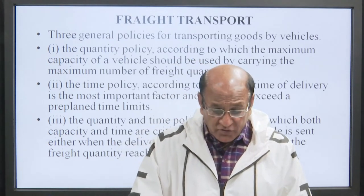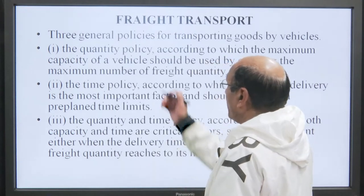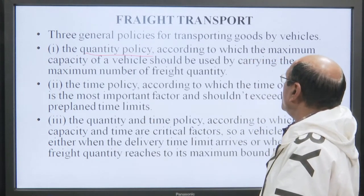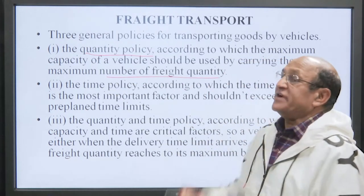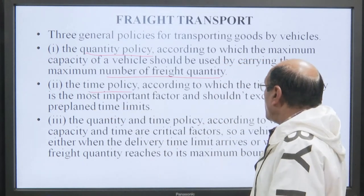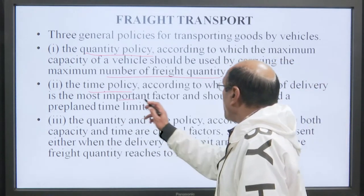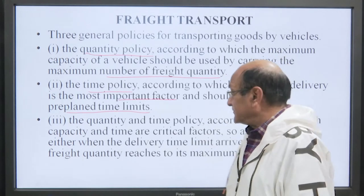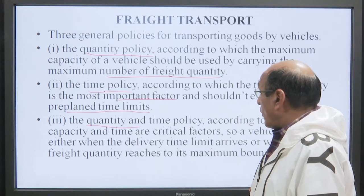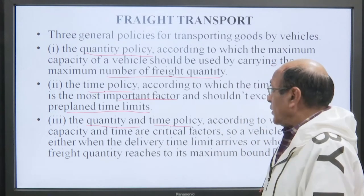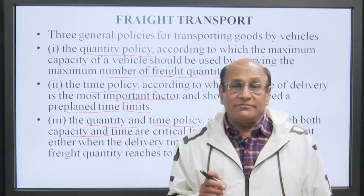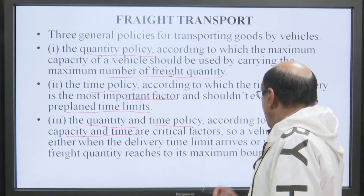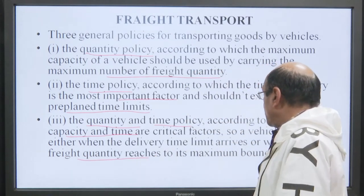Three general policies for transporting goods by vehicle: First is the quantity policy, according to which the maximum capacity of a vehicle should be used by carrying the maximum number of freight quantity. The second is the time policy, according to which the time of delivery is the most important factor and should not exceed a pre-planned time limit. The third principle is the quantity and time policy, according to which both capacity and time are critical factors. A vehicle is sent either when the delivery time limit arrives or when the freight quantity reaches its maximum bound.